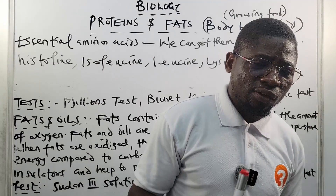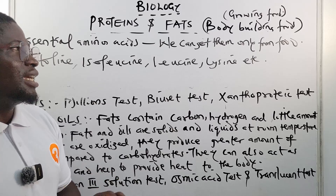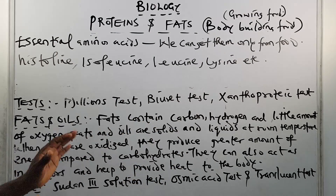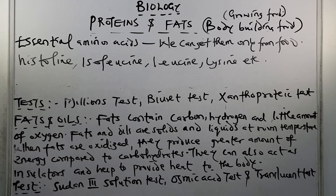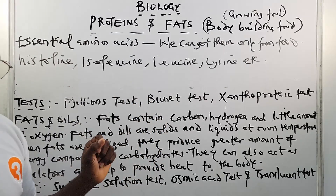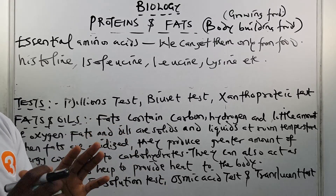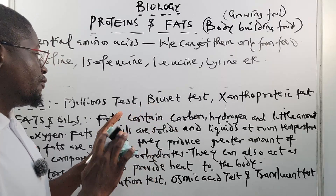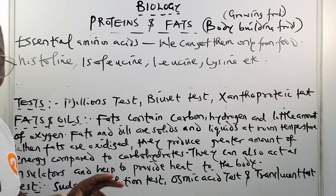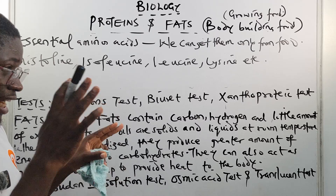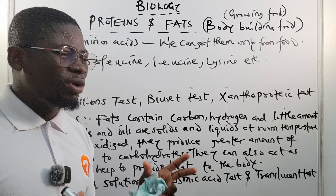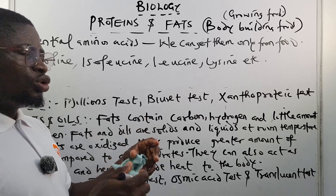Proteins are the body-building foods — growing foods — and the body needs them for growth and proper metabolism. For the test of proteins, there are about three tests: number one, the Millon's test; number two, the Biuret test; number three, the Xantho-proteic test. We won't discuss these in detail here — please go to our organic chemistry class for full details, as these tests appear in past questions.